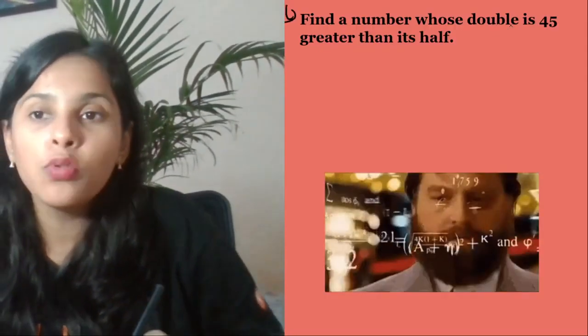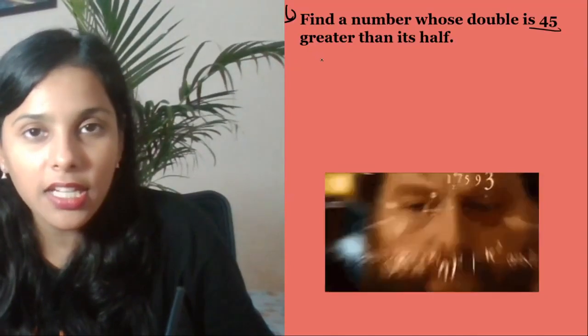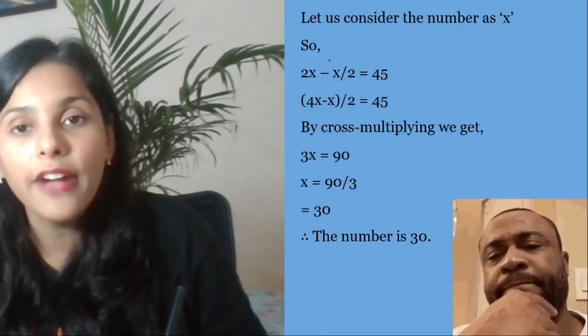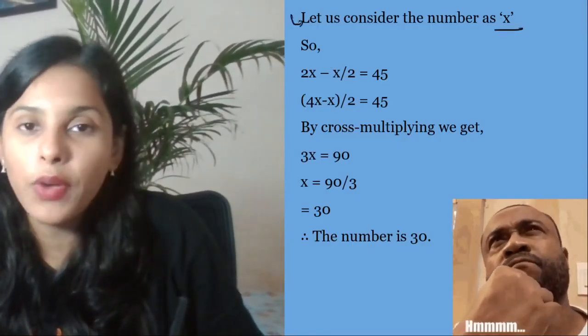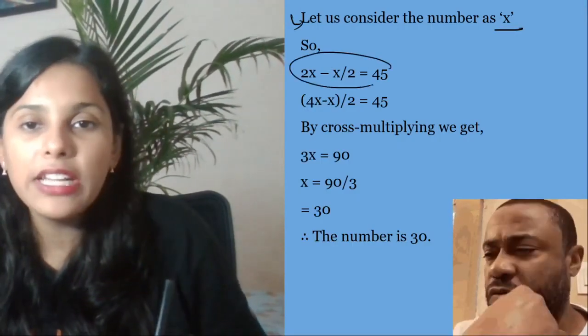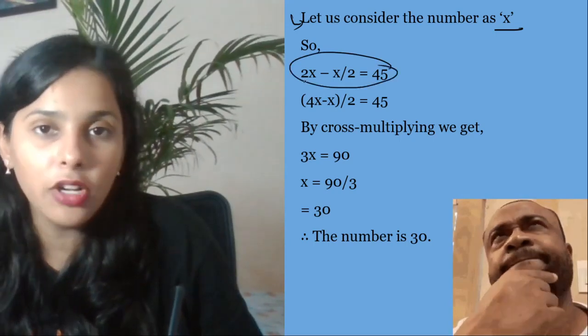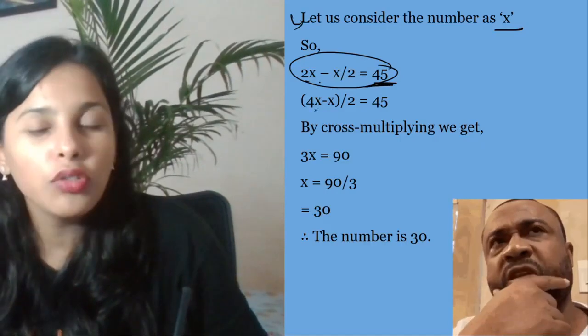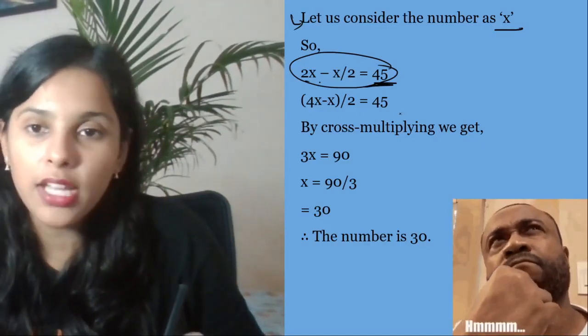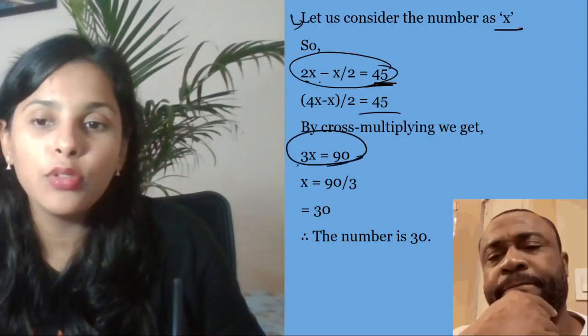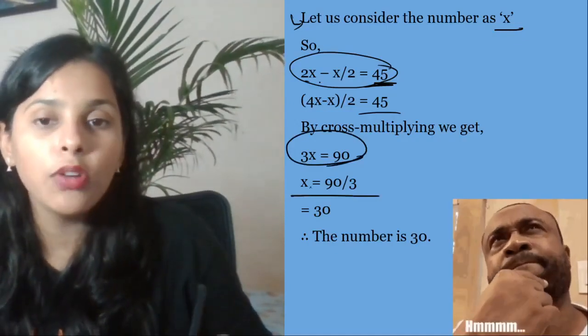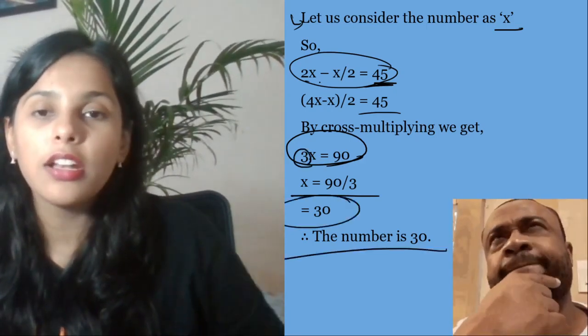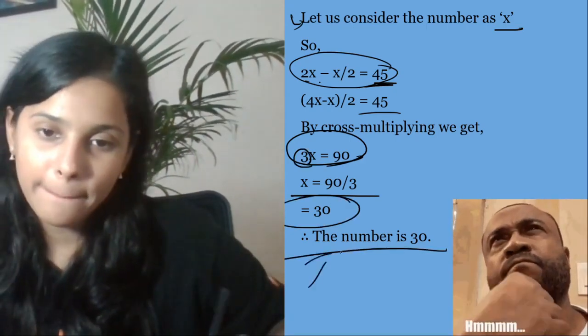Find the number whose double is 45 greater than its half. You need to find such a number whose double is 45 greater than its half. According to the question, we take that number as x. The question says double of x and half of that - the difference will be equal to 45. So this becomes (4x minus x)/2 equals 45. Cross multiply, we get 3x equals 90. X equals 90 by 3, because we took 3 to RHS. So answer comes as 30. So the number is 30. Boom.